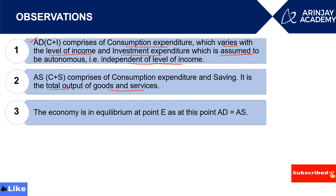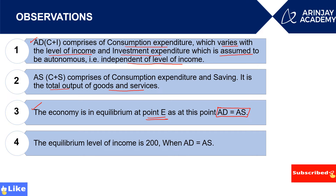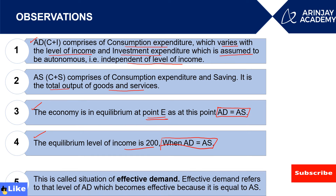The economy is in equilibrium at point E because at that point, aggregate demand equals aggregate supply. The equilibrium level of income is 200, because at that point aggregate demand equals aggregate supply. The income level where aggregate demand equals aggregate supply is known as the equilibrium level of income.